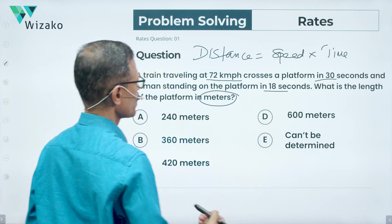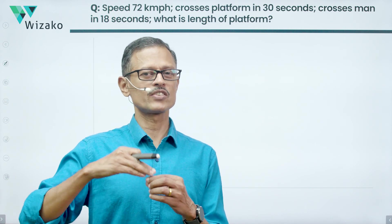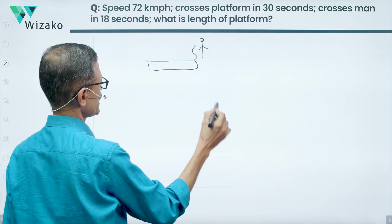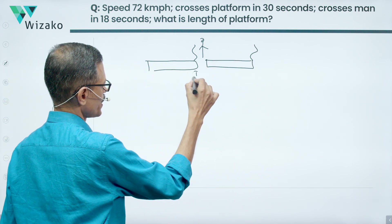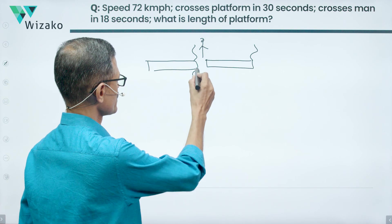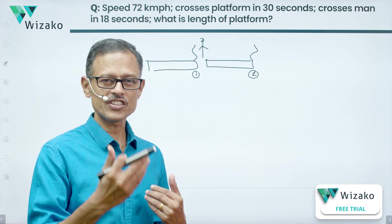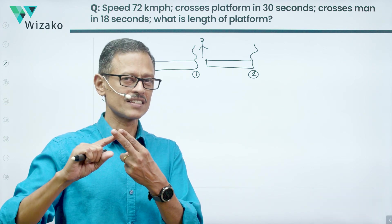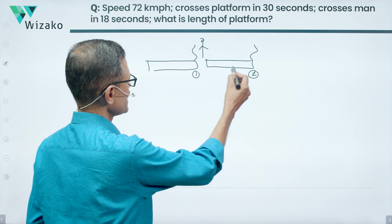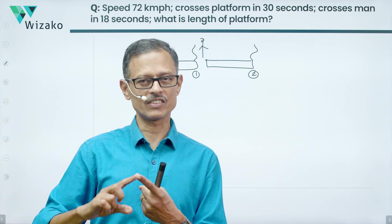We've been given the speed of the train and two scenarios. Let's look at a schematic for when the train crosses a man. The train completely crosses the man — Point 1 is when the engine is just about crossing the man, and Point 2 is when the last carriage has crossed him. The man is stationary, and his length is insignificant compared to the length of the train, which runs into hundreds of meters.